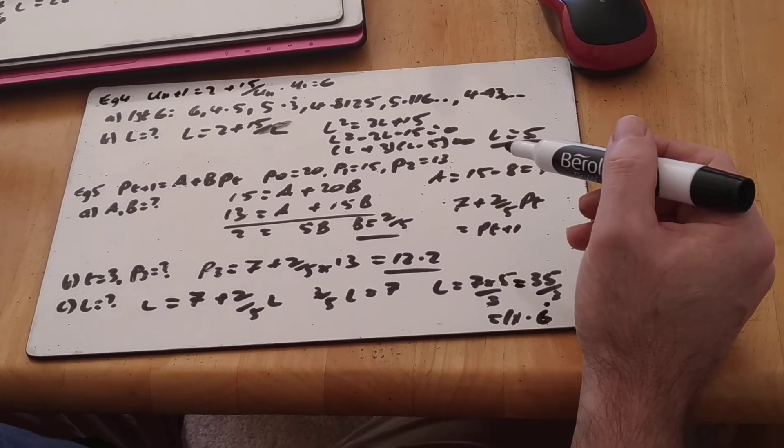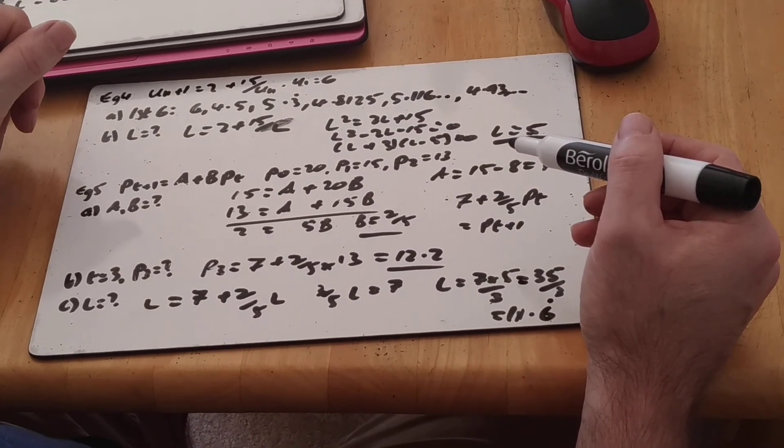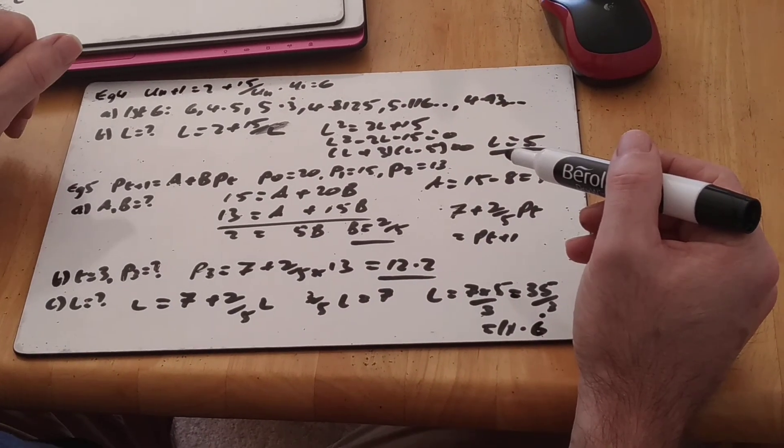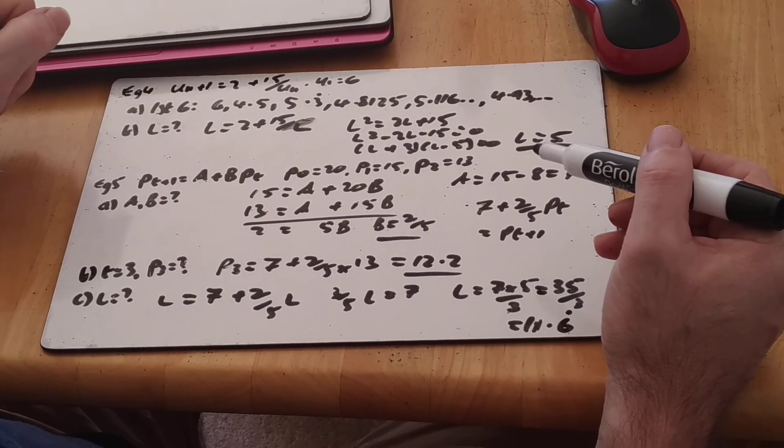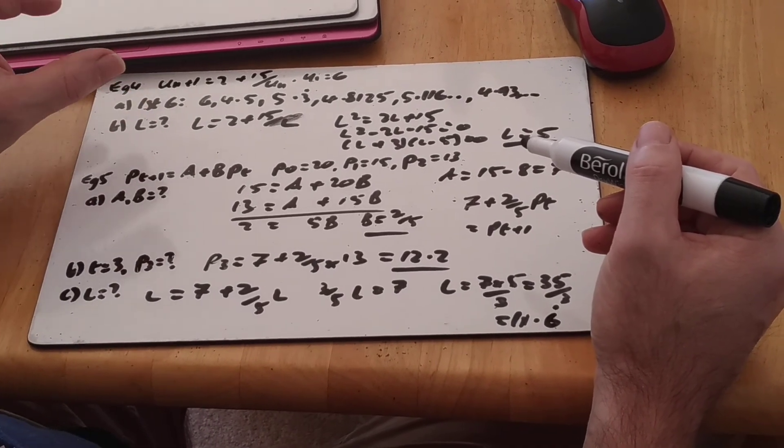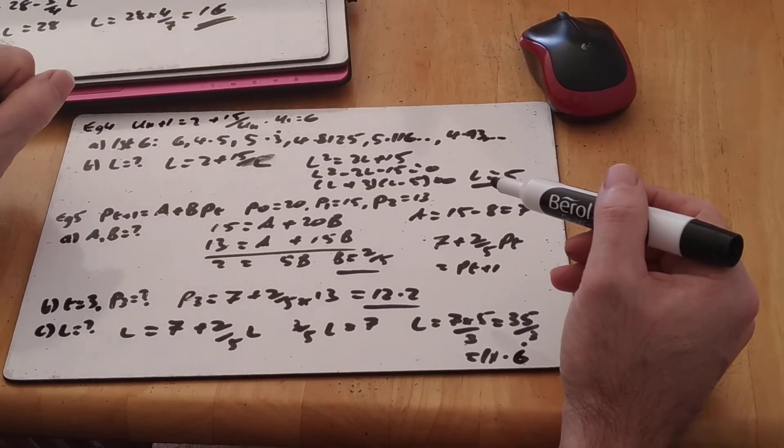So we've gone through our inductive series. How to find limiting values. Whether it's convergent, divergent or periodic. And it's all, be aware it's a tiny, tiny bit of the chapter. But they do slip in these questions about it on a regular basis.